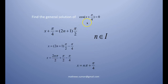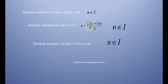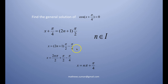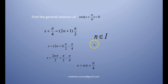Find the general solution of cos(x + π/4) = 0. The general solution of cos x = 0 is x = (2n + 1)π/2. So here, x + π/4 = (2n + 1)π/2, which gives x = (2n + 1)π/2 − π/4. Simplifying, x = nπ + π/4, where n is an integer.